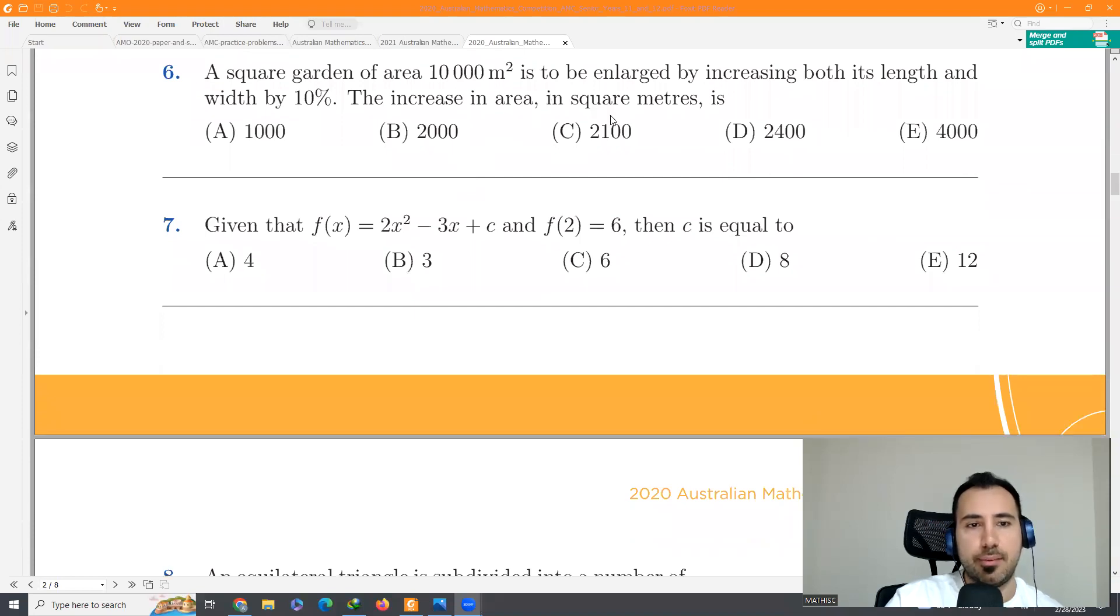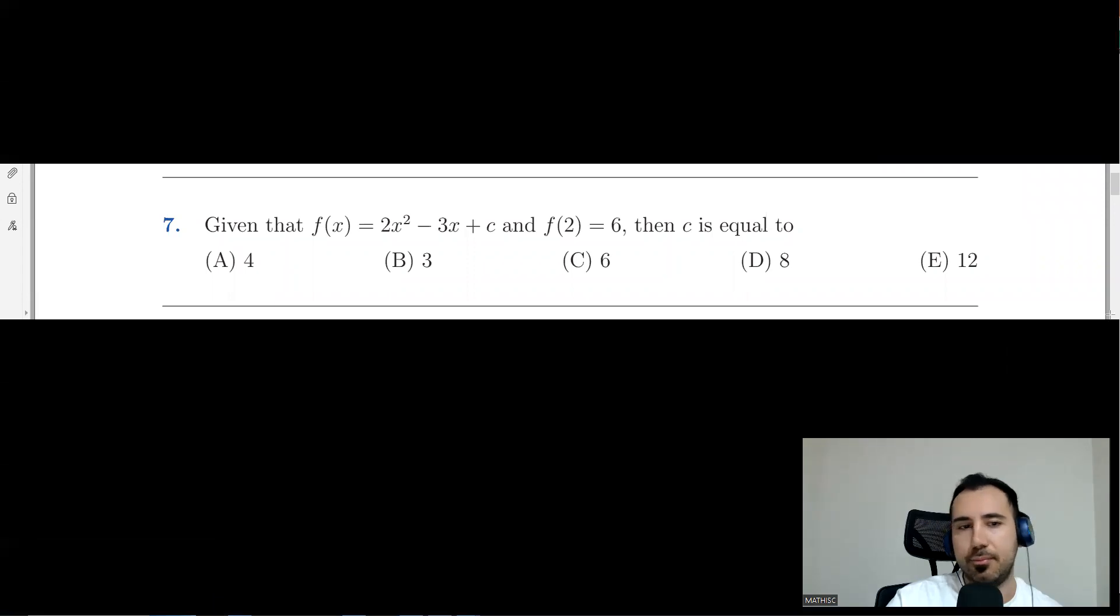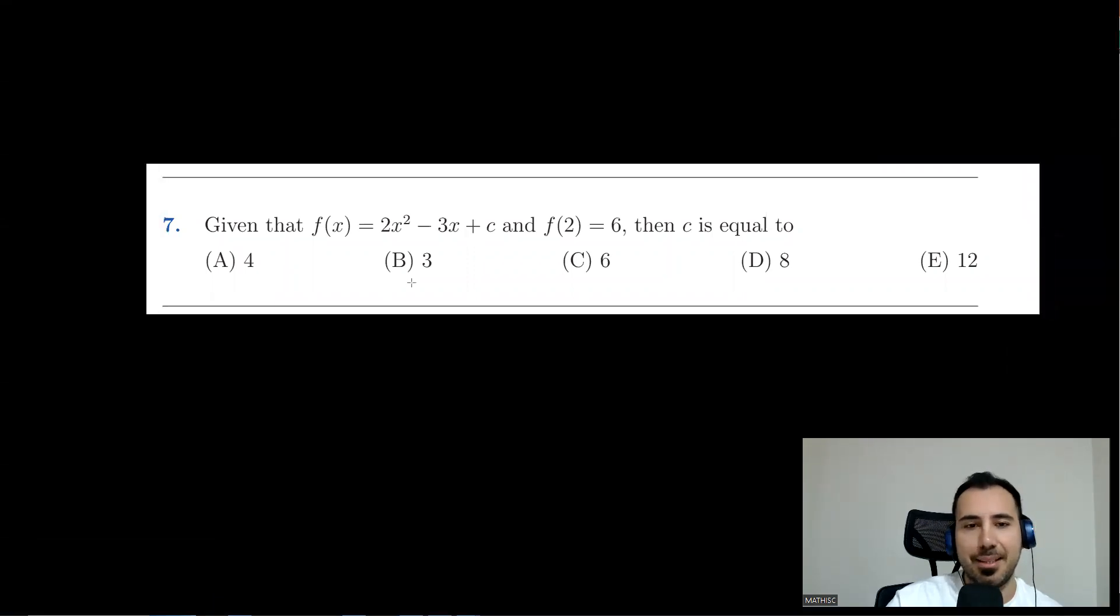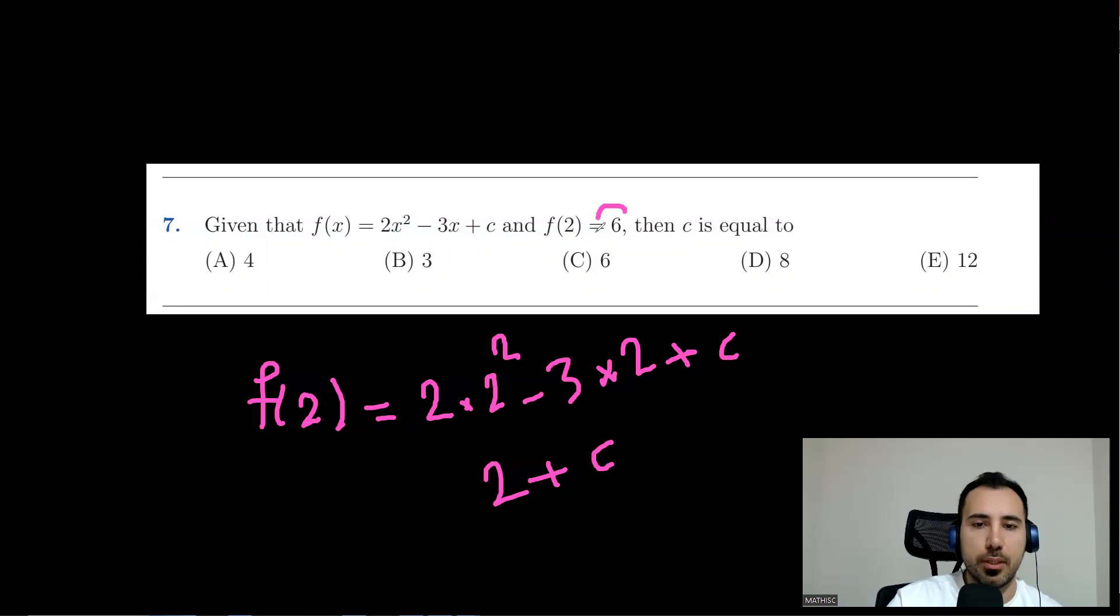Question seven. If you know what functions are, then it's easy. All you have to do is put 2 instead of x. So F(2), meaning instead of x, we'll put 2. So it's going to be 2 times 2 to the second power minus 3 times 2 plus C. Let's simplify this. 8 minus 6, it's going to be 2 plus C. Here it says 2 plus C equals 6. So C would be 4.